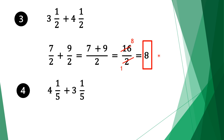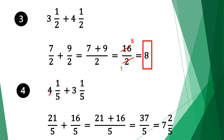Moving on to question 4, we have 4 and 1 fifth plus 3 and 1 fifth. Again we convert our mixed fractions into normal fractions. 5 times 4 is 20, plus 1 is 21, and we bring the denominator 5. Bring the plus sign. Do the same for the second fraction: 5 times 3 is 15, plus 1 is 16. Bring the denominator 5. Now we have normal adding fractions with the same denominators.